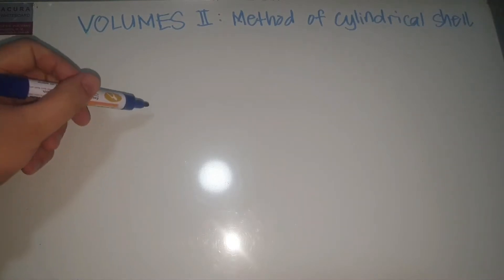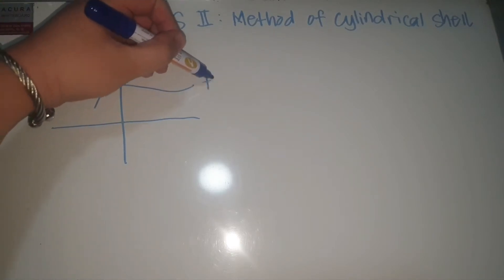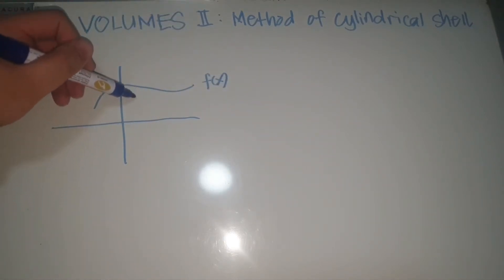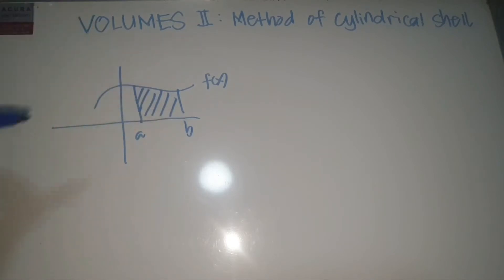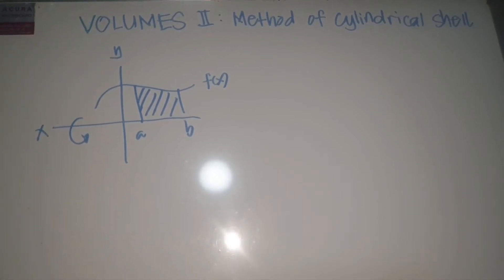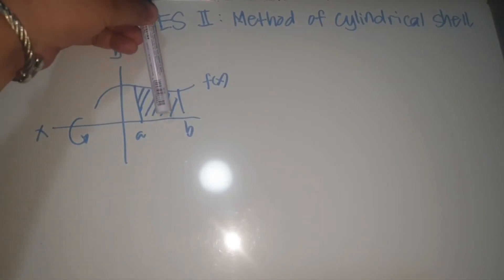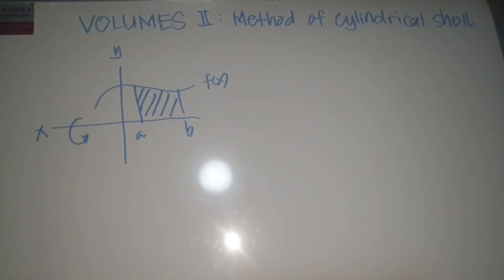First, if we have a graph of f(x) between a and b, and we rotate this shaded figure about the x-axis, you have to consider what type of element to use. In the previous video, if I use an element that is vertical, the element is perpendicular to the axis of rotation — so for that we will be using the method of either disks or washers.